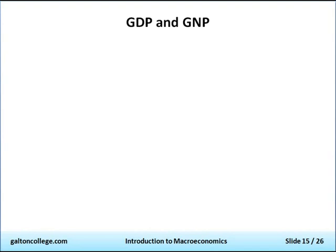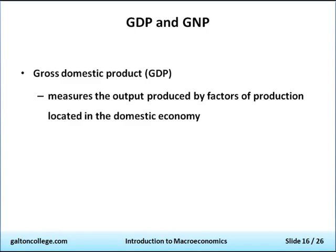Now let's talk about gross domestic product and gross national product — GDP and GNP. Gross domestic product is a measure of the output produced in the domestic economy, produced by our factors of production: land, labor, capital, and entrepreneurship. The more we produce, the higher our GDP.